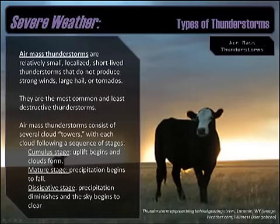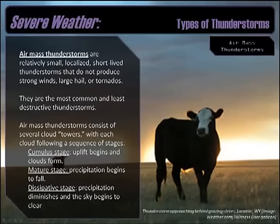Air mass thunderstorms are relatively small, localized, and short lived. They're thunderstorms that don't produce strong winds, large hail, or tornadoes — they're generally pretty mild. They will give you thundershowers and things like that, but they're not going to be associated with any kind of severe weather. They're very common and not very destructive. Of course there's going to be some lightning associated with them, so there is still a potential for danger. But they're not like some of the mesocyclones that we'll talk about in a little bit.